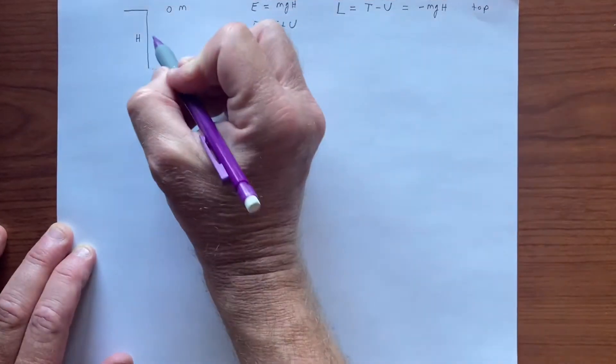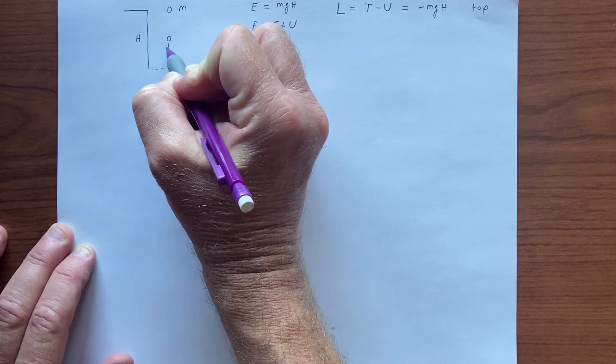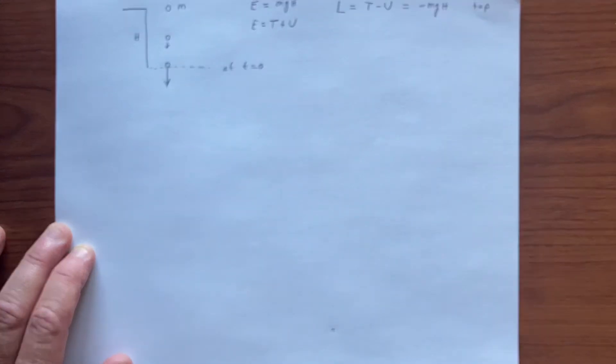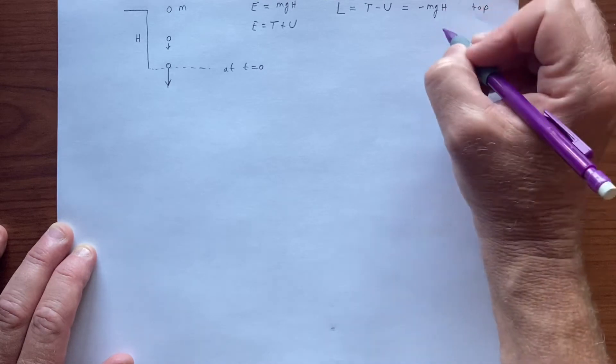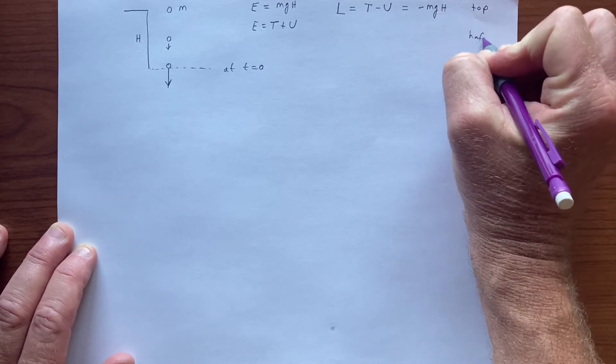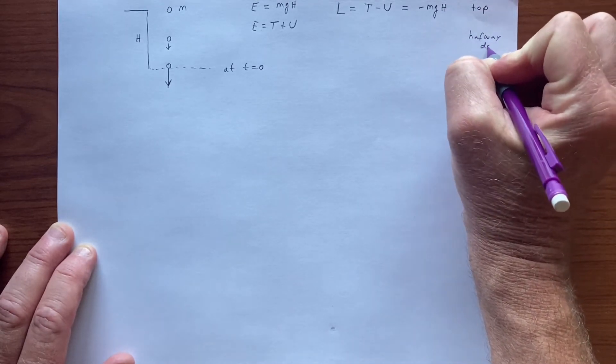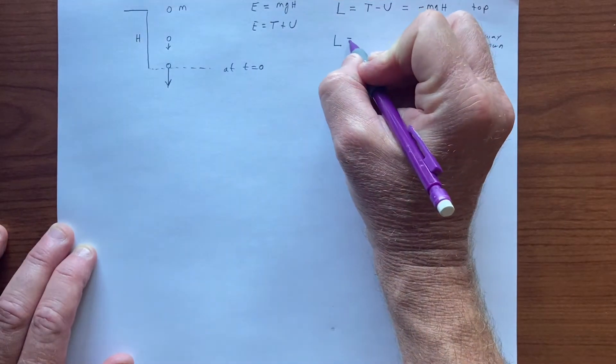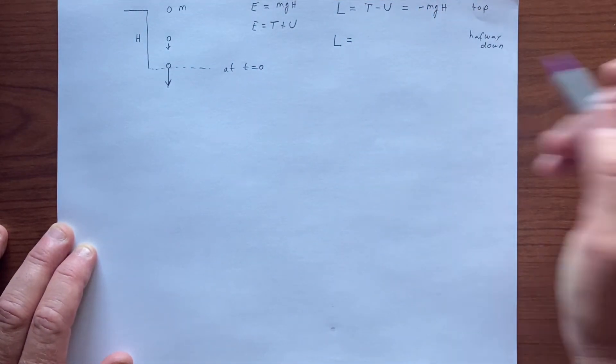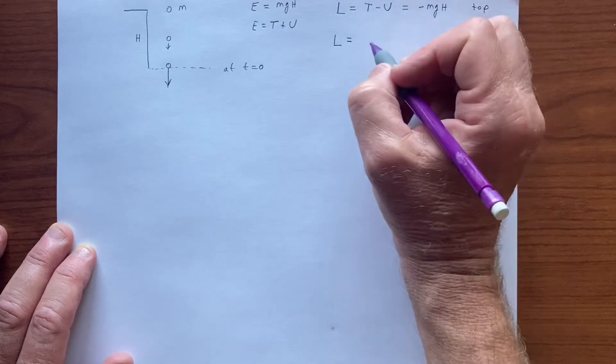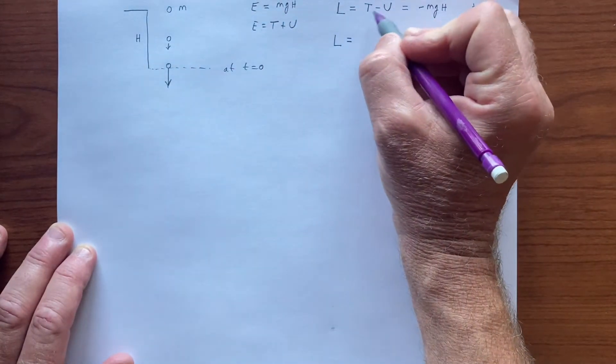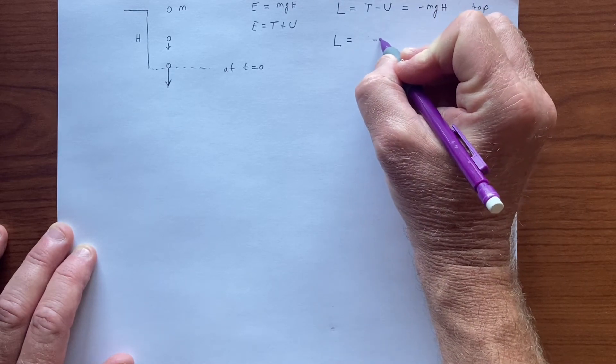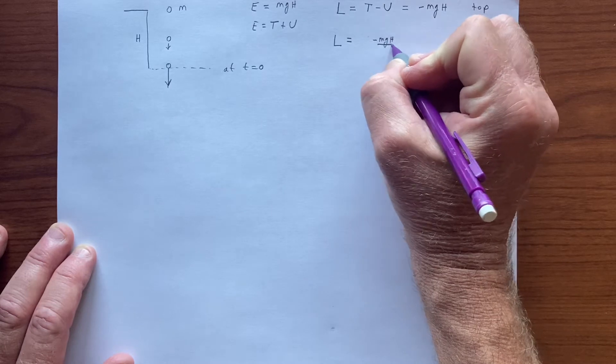And then, when the object is halfway down, it's going to be speeding up, and of course it will hit the ground with the maximum speed. This will be halfway down, right? The energy is always the same, but this other quantity that we called L, which is the difference between the kinetic and the potential, this will look like, now we have that the potential energy is mgh over 2, so we have minus mgh over 2.